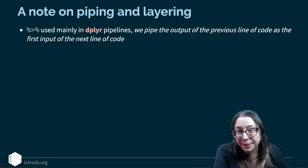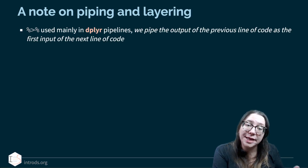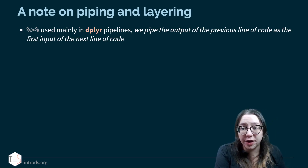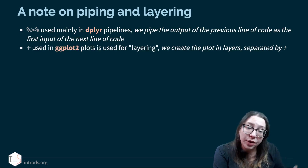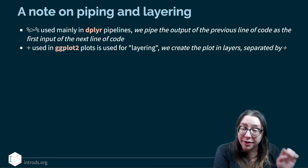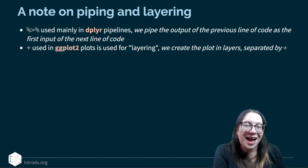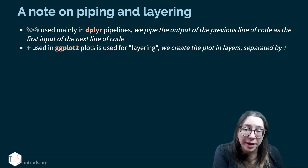A note on piping versus layering: the pipe operator is used mainly in dplyr pipelines, piping the output of one line as the first input of the next, while the plus operator is used in ggplot2 for layering — creating a plot in layers separated by plus. Wouldn't it be nice if they were the same operator? Yes, but they were developed at different points in history and needed to stay separate.